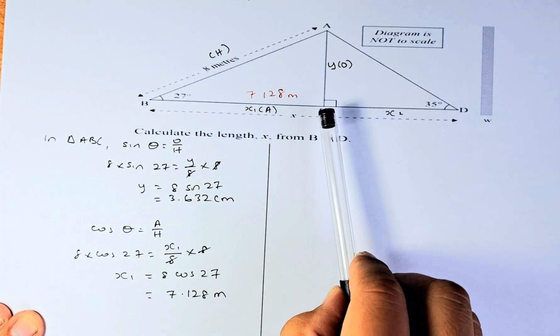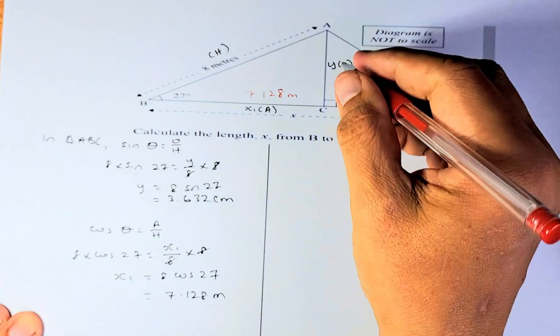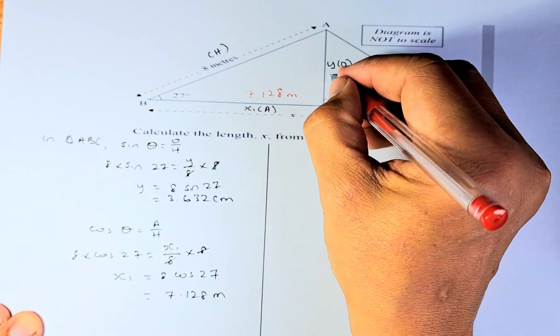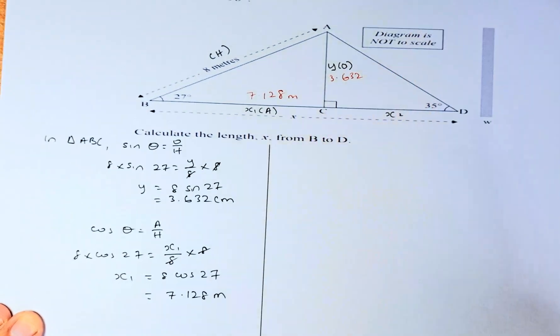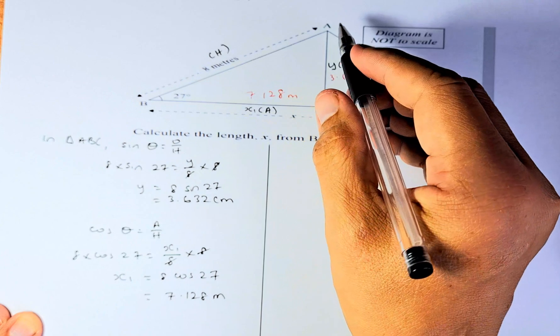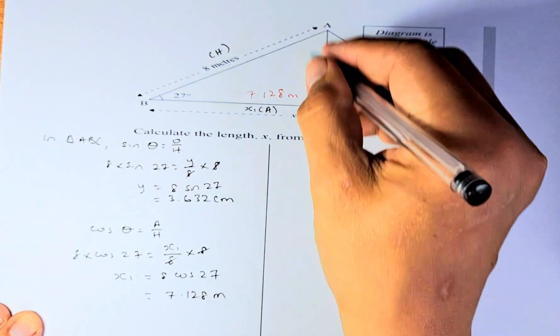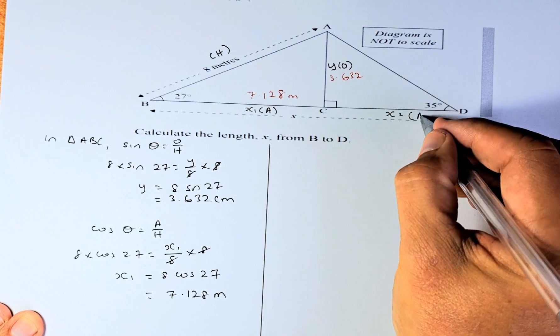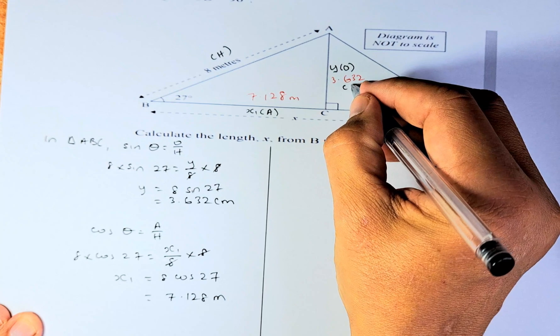Now our job is to calculate CD. We have found that Y previously was 3.632, and we're going to use this to solve the length X2 using the triangle ACD. Using ACD, X2 is going to be the adjacent, and 3.632 is going to be the opposite because it's opposite angle 35.